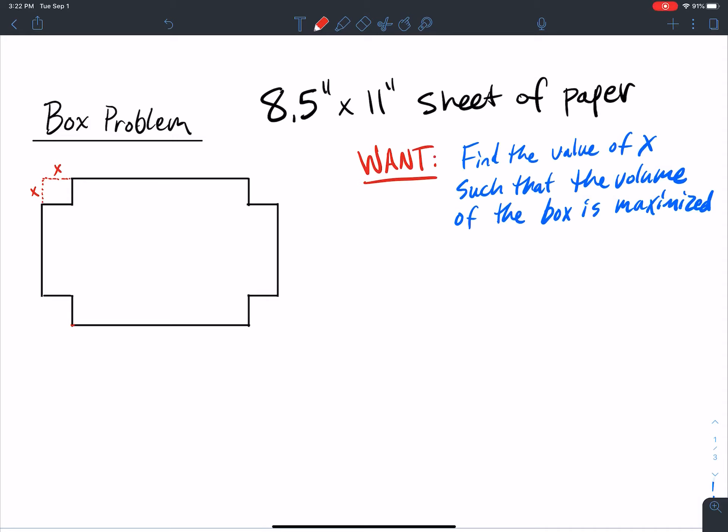In this video, we're going to do what's called the box problem, another optimization example. I've got an 8.5 by 11 sheet of paper, your standard size sheet of paper. What I want to do is find the value of x, so what we clipped out of each corner here, such that the volume of the box is maximized.